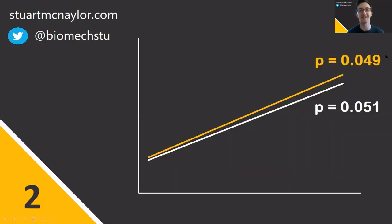Related to this, the second mistake is making indirect comparisons between groups or conditions. We cannot simply make inferences on the basis that one group or condition has a statistically significant effect and another does not. If we want to compare those two groups or conditions, then we need to make sure that we directly compare their effects.